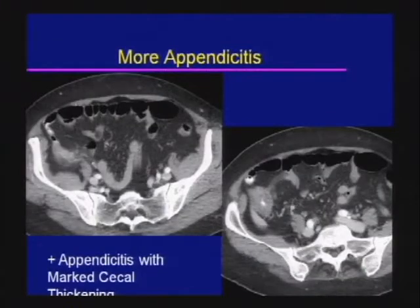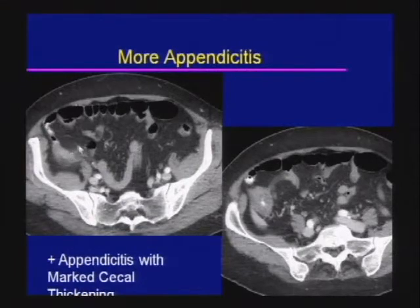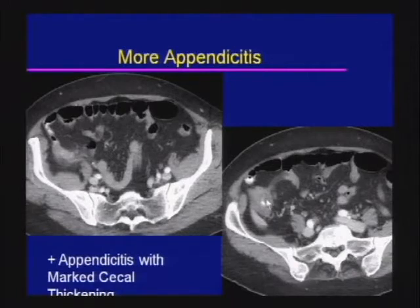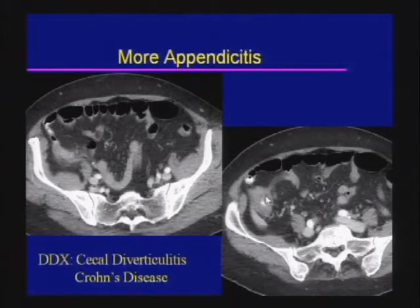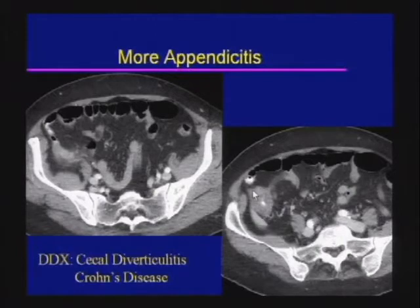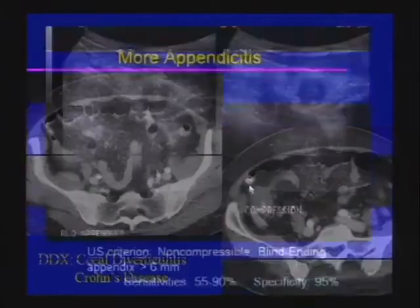A final case of appendicitis shows an abnormal, thickened appendix with peri-appendiceal stranding and marked cecal thickening. Don't shy away from the diagnosis of appendicitis if you have that much cecal thickening, but include several things in the differential, including cecal diverticulitis, Crohn's disease, and a rare underlying malignancy.